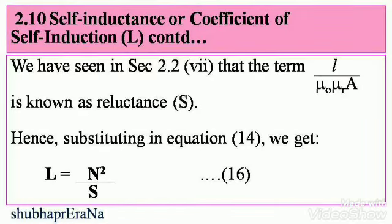We have seen in section 2.27 that the term l / (μ₀μᵣA) is known as reluctance (S). So we can get another equation by substituting this value into Equation 14: L = N²/S. This is Equation 16 — another way to express self-inductance.